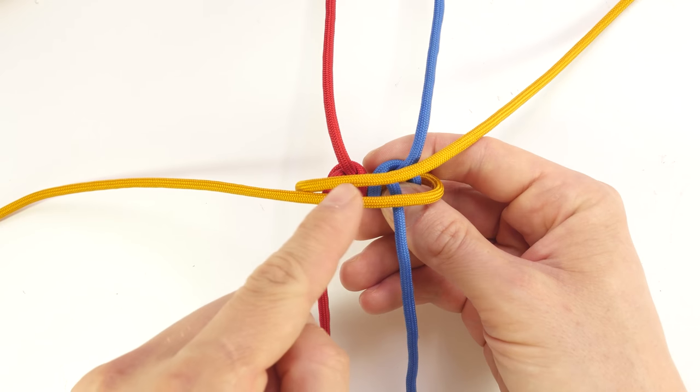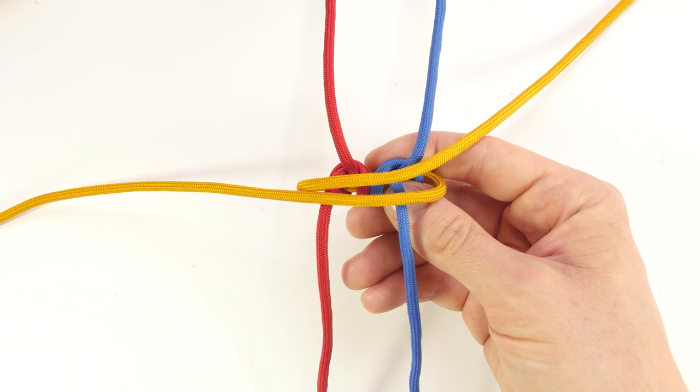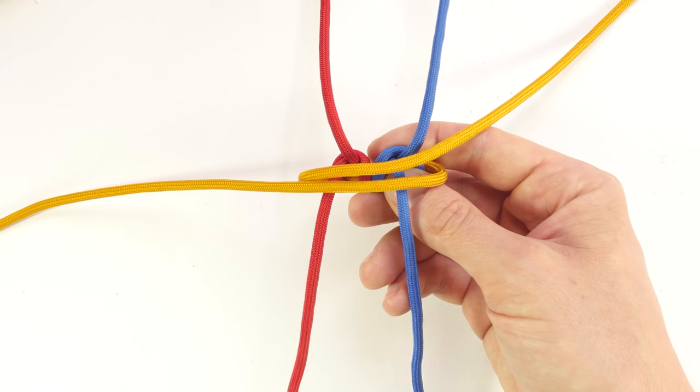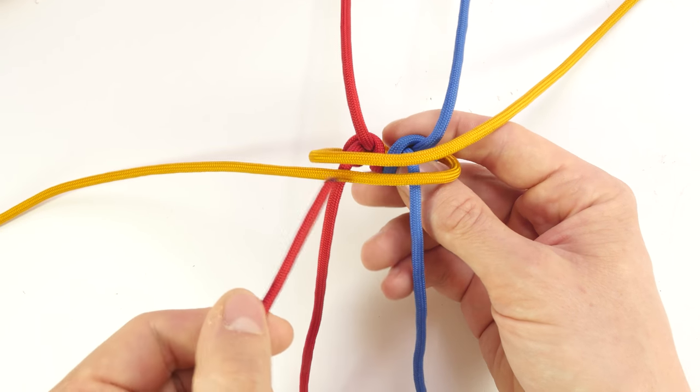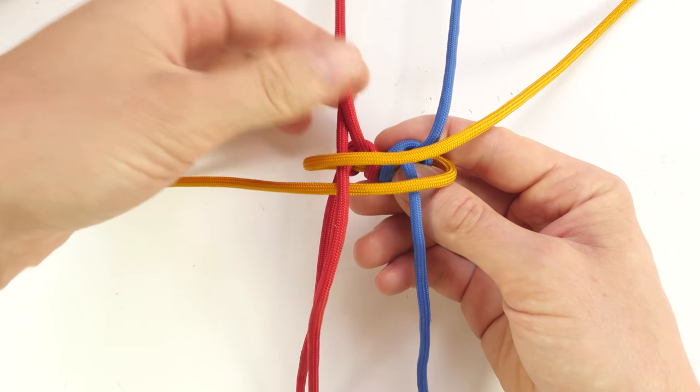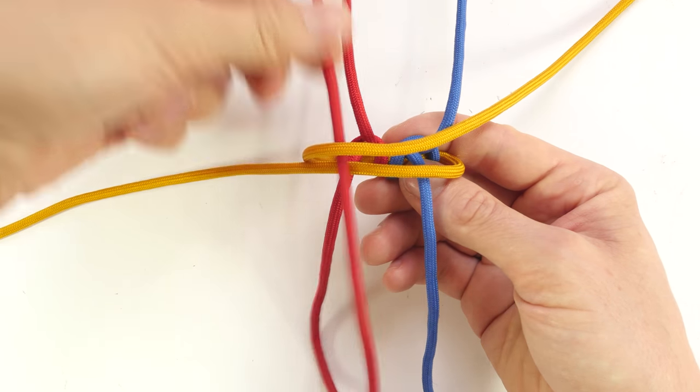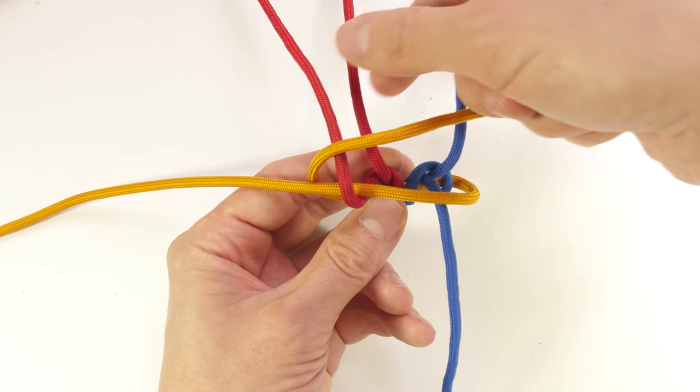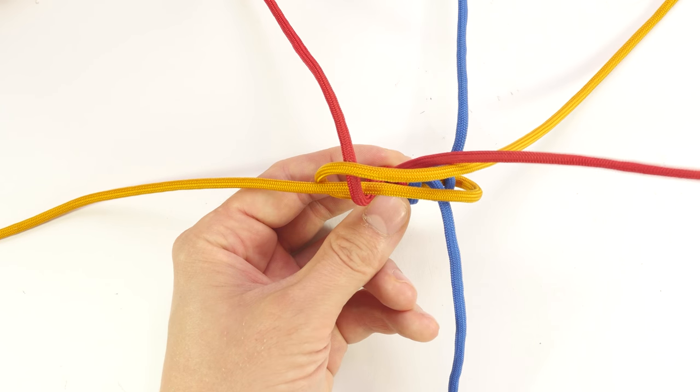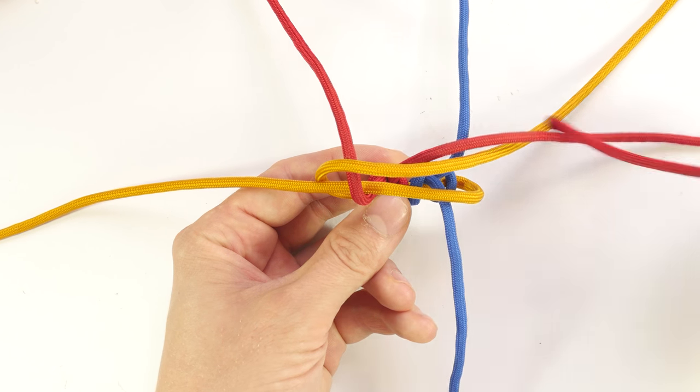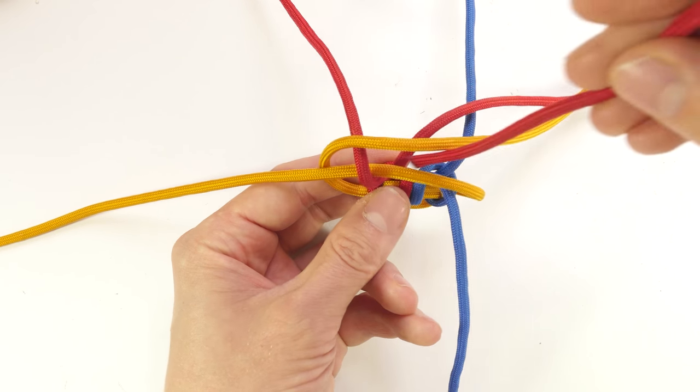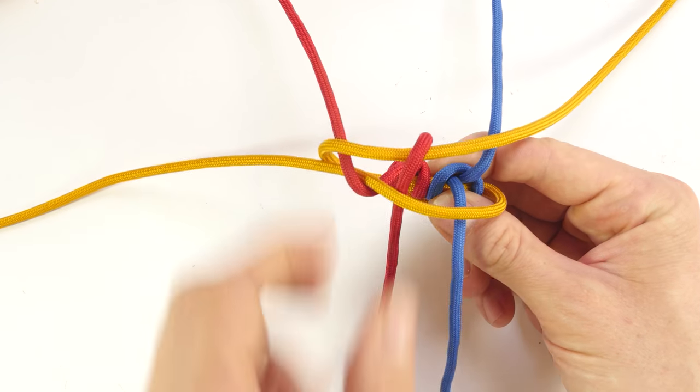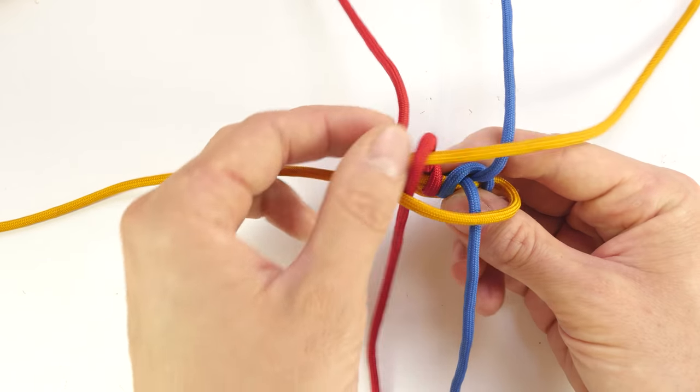Now I'm going to weave through these two cords. I'm going to start with the first cords on the left, and travel over, then under, towards the top side. Then I'm going to take the second cord, and weave over, then under, towards the bottom side. Like this.